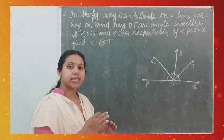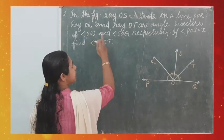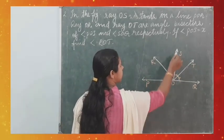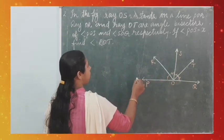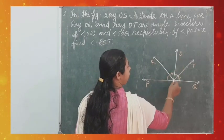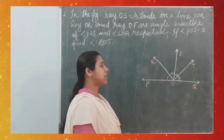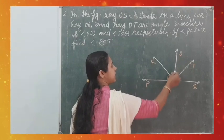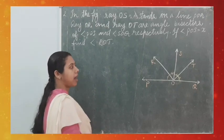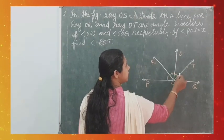An angle bisector divides an angle into two equal parts. So OR bisects angle POS, meaning angle POR = angle ROS. And OT bisects angle SOQ, meaning angle SOT = angle TOQ. These two pairs of angles are equal. Angle POS = x° is given, and we want to find angle ROT.